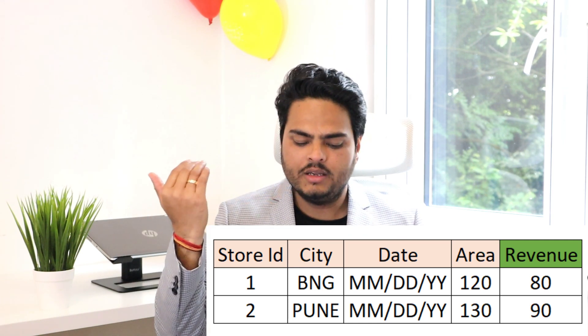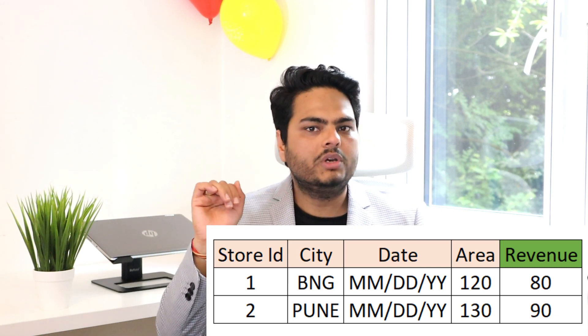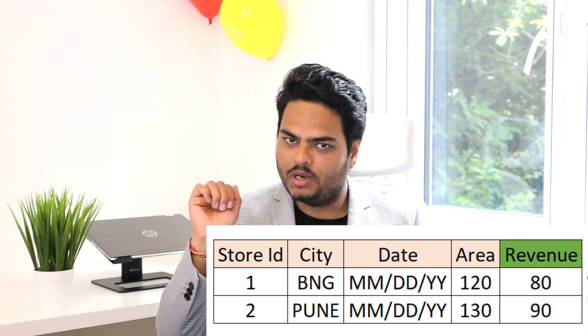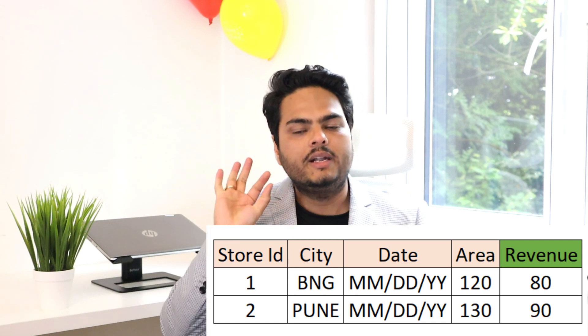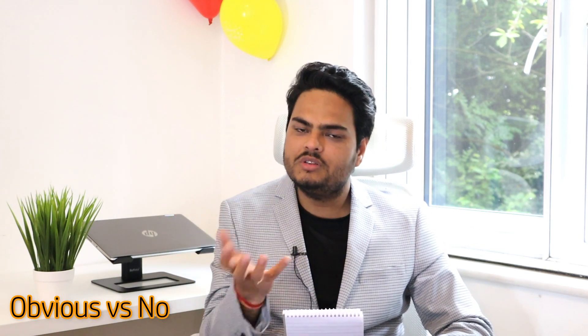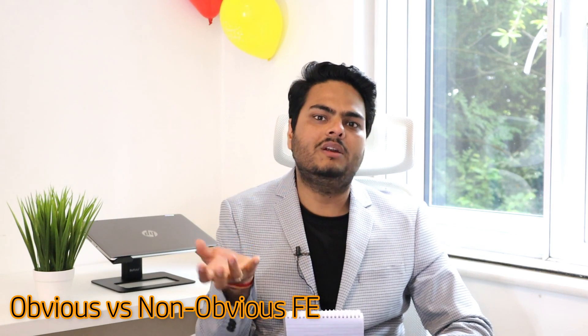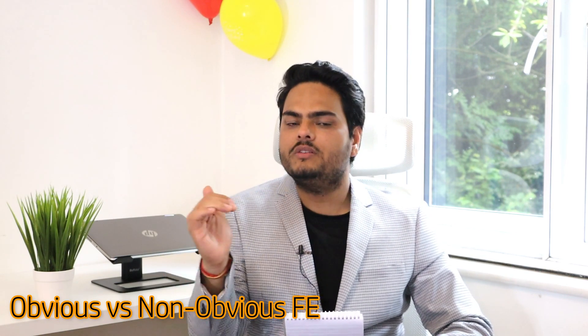Then it will come to your mind: I will encode the city column, because it is a categorical column. So I have spoken about three things here: data cleaning, outlier treatment, encoding of the categorical column, and removing the IDs. All these I will put in the category of something known as obvious feature engineering. In this video I am not going to talk about obvious feature engineering, because everybody who understands a little bit of machine learning knows these things need to be done.